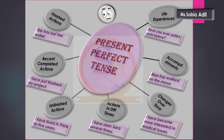There is another thing I must tell you — you can use the present perfect tense in different situations. First, for finished actions, for example: 'She has lost her wallet.' Second, for recent completed actions, for example: 'I have just finished my project' — this is an action that is completed recently.